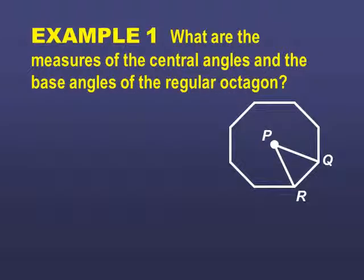Let's go ahead and do an example. What are the measures of the central angles and the base angles of the regular octagon? The central angle would be Q, P, R. The base angles are the two that are inside the triangle, but aren't P, Q, R. So, it would be P, R, Q, and P, Q, R, those bottom angles there. So, we're finding all three angles inside that little triangle there.